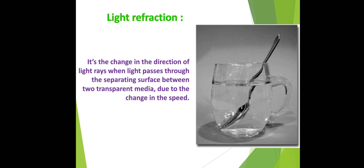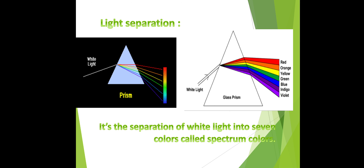Light separation: using a glass prism, we can prove that white light consists of seven spectrum colors. The prism separates white light into: red, orange, yellow, green, blue, indigo, and violet. Light separation is the separation of white light into seven colors called spectrum colors.